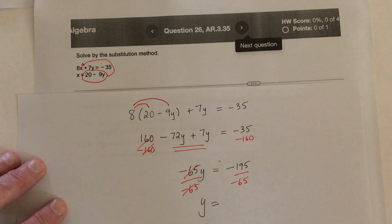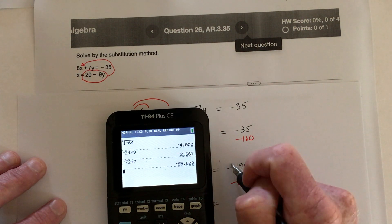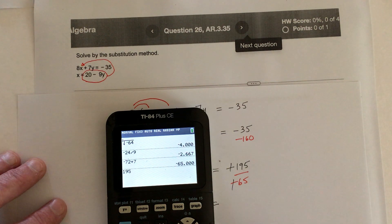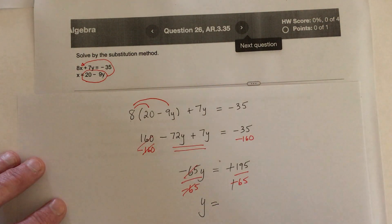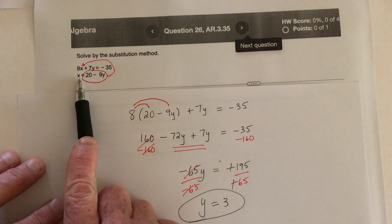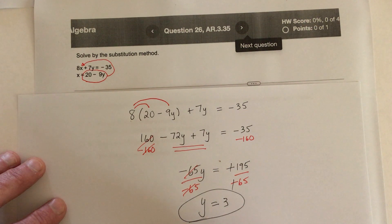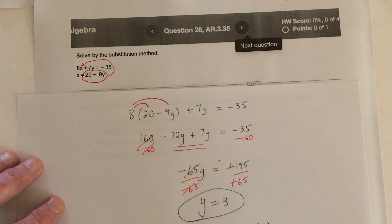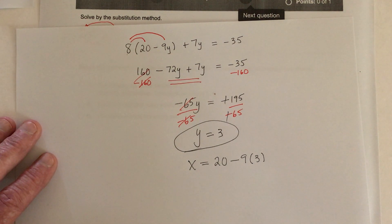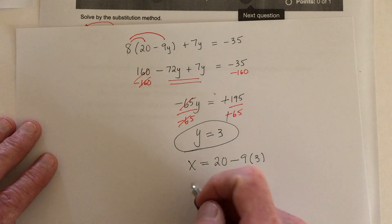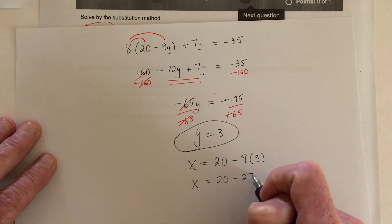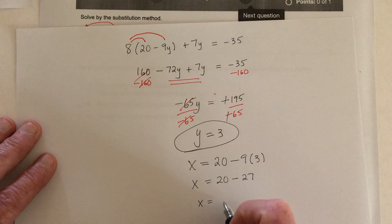I'm going to guess the answer is 3. The two negatives cancel, so 195 divided by 65, and the answer is a positive 3. And don't start celebrating quite yet because we also need to find out what x equals. So if you just go back to this equation and replace the y with a 3, then we'll be done. x equals 20 minus 9 times y — replace the y with a 3, so this is going to be 27. So x equals 20 minus 27, and that is negative 7.